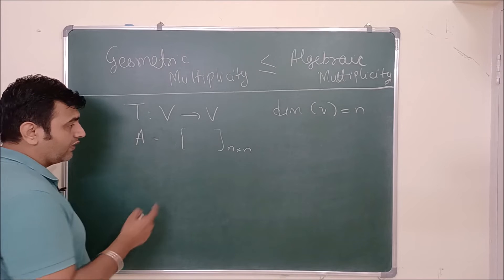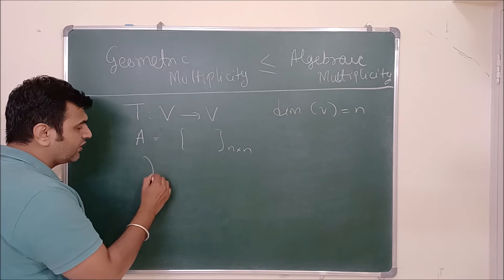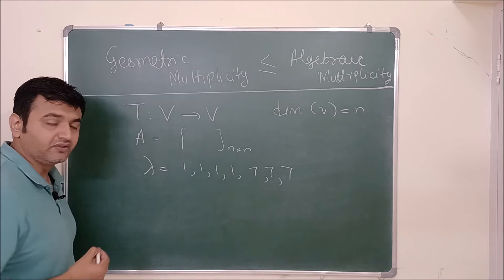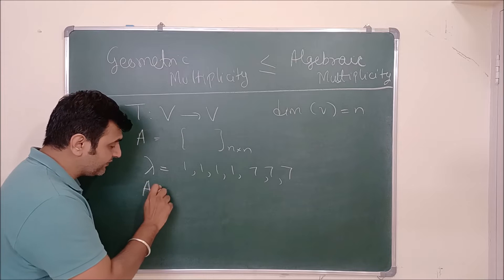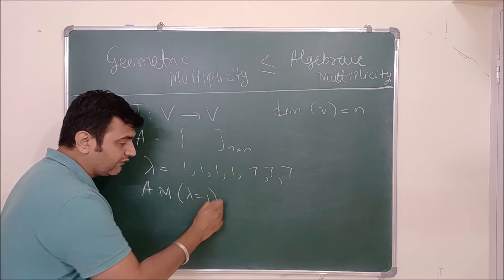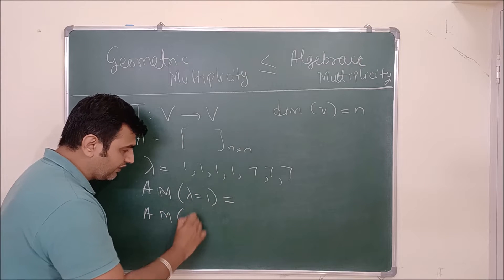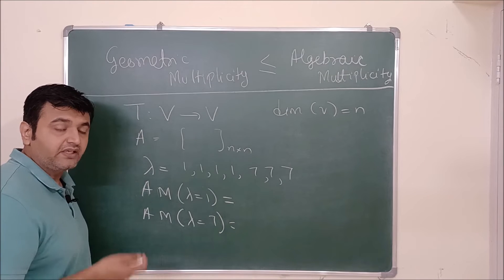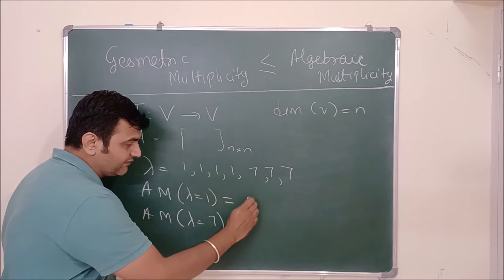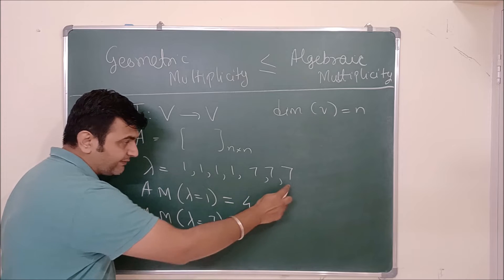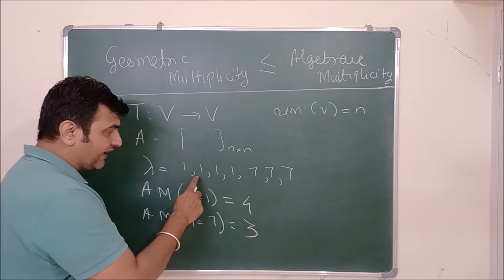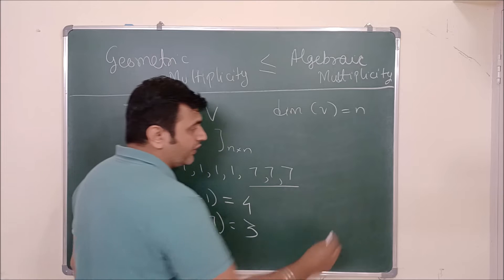Suppose for this matrix you get eigenvalues 1, 1, 1, 1 and 7, 7, 7. Algebraic multiplicity is always for the eigenvalues. The algebraic multiplicity for λ=1 and for λ=7 are nothing but the number of times that specific eigenvalue is repeated. So 1 is repeated 4 times, giving algebraic multiplicity 4, and 7 is repeated 3 times, giving algebraic multiplicity 3.